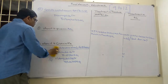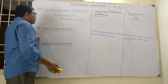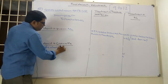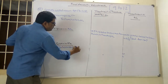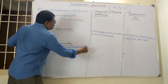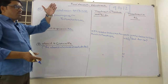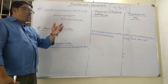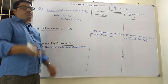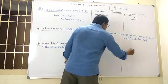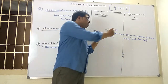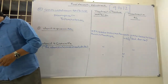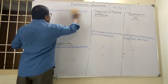Whenever goods withdrawn for personal use is given in the trial balance, it means the above entry — Drawings to Purchases — was already written and posting is already done. Purchases are already reduced, and drawings account has already been added. So you need not do anything specifically; whatever work was to be done is already executed.